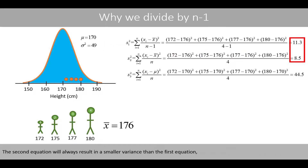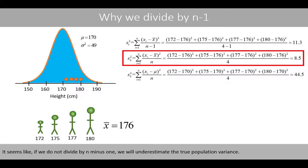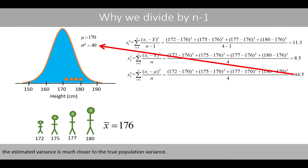The second equation will always result in a smaller variance than the first equation, because we divide by 4 instead of 3. It seems like if we do not divide by n minus 1, we will underestimate the true population variance. In contrast, using the third equation — where we use the population mean instead of the sample mean — the estimated variance is much closer to the true population variance.